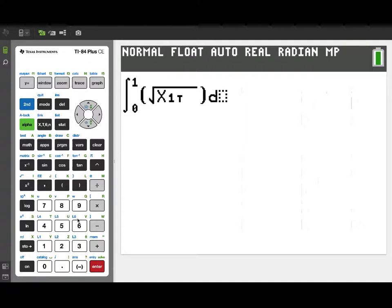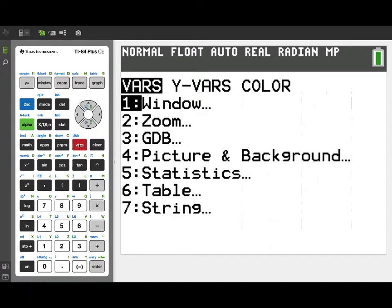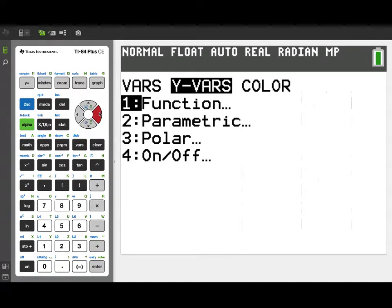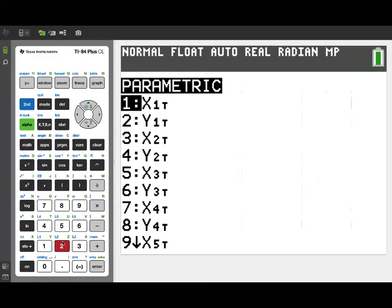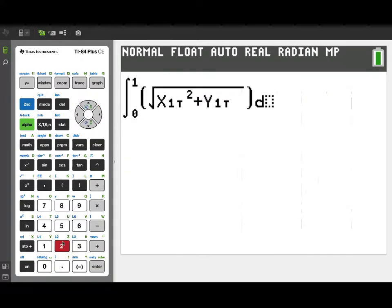That will be the square root of the sum of squares of the two velocity components. So you'll notice we retrieved X1t from the Y variables menu and squared it. We'll go back to the parametric Y variables menu again, retrieve Y1t, square that, sum them, take the square root, and we'll integrate with respect to t.